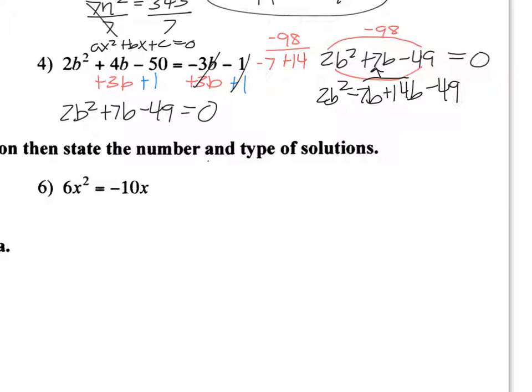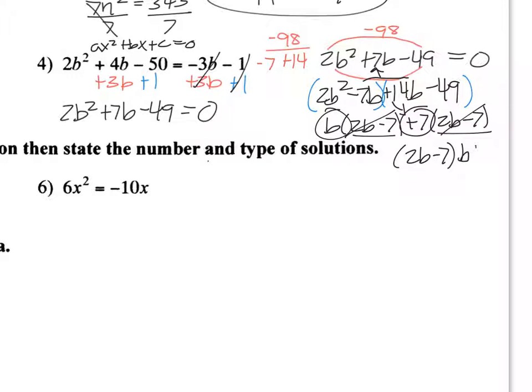Now I have my four terms. So then we group by twos. So again, reviewing what we did yesterday. So here I take out a b. That's 2b minus 7. Here I take out a positive, in this case 7. And that'll be 2b minus 7. Again, these are the same. That's all good. So those are out, 2b minus 7. And then take what I had left, which is b plus 7.